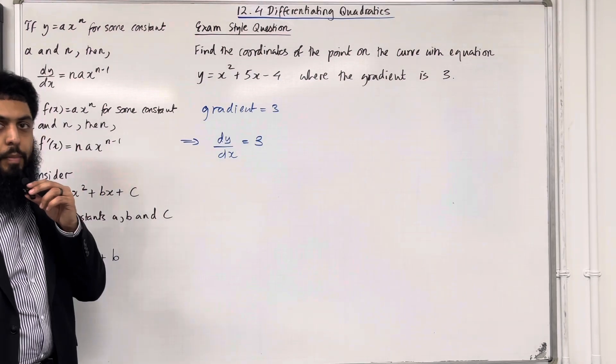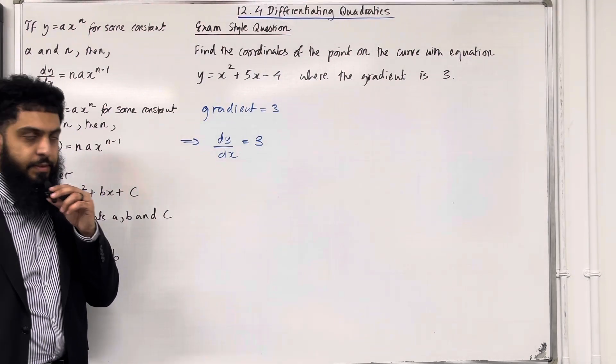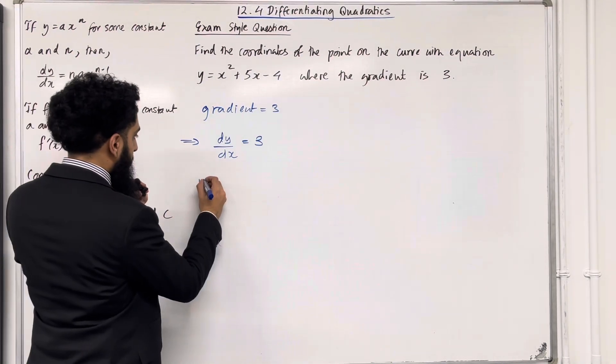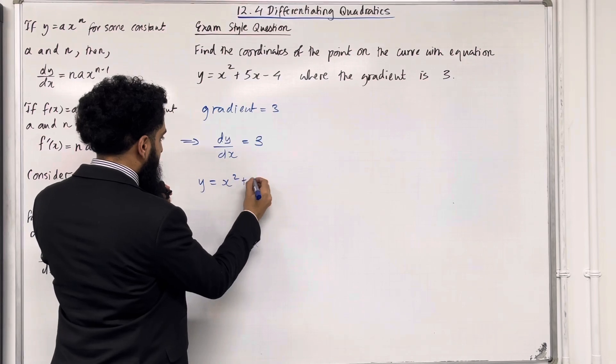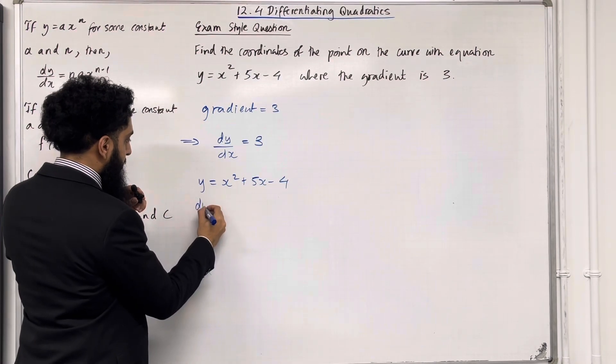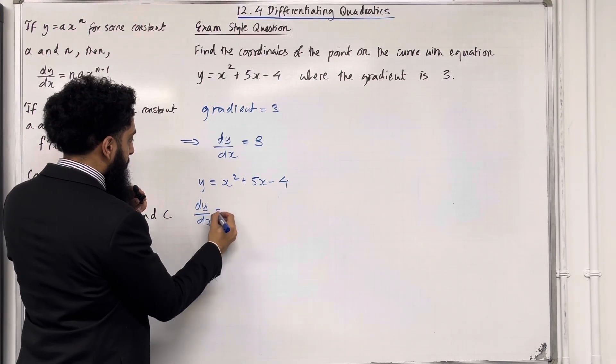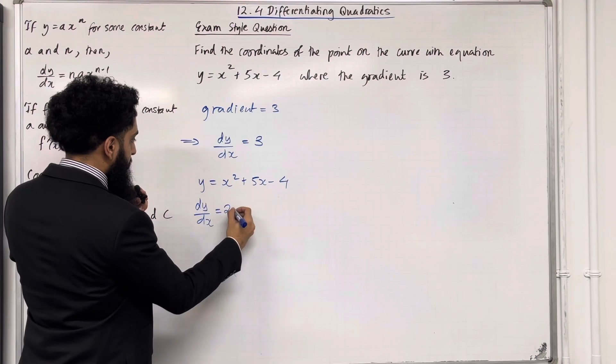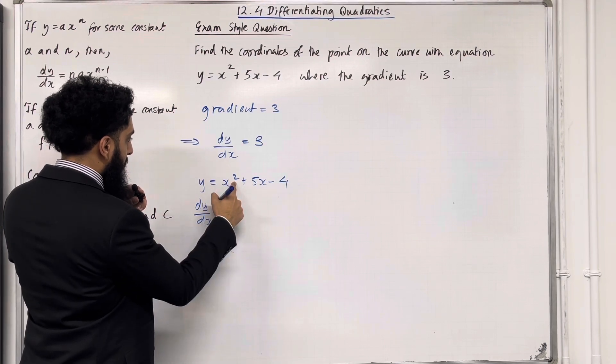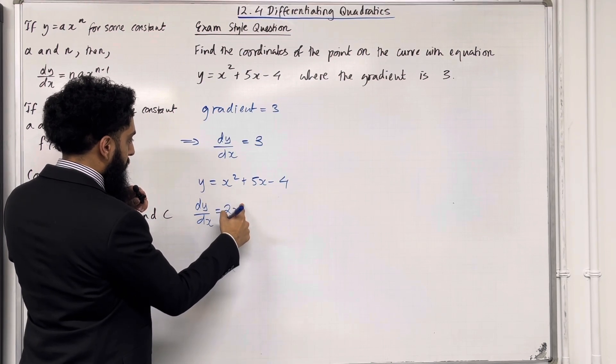So we're going to start by working out dy over dx. I've got y equal x squared plus 5x minus 4. So dy over dx is equal, bring down the power. So 2x to the power 2 take away 1, it's just 1, but you don't need to write 1 there.